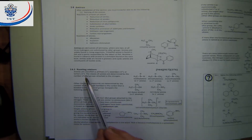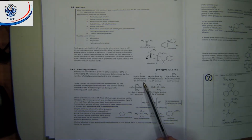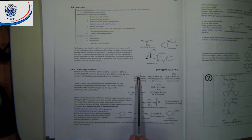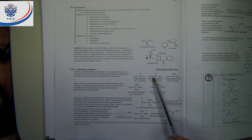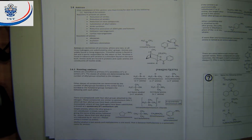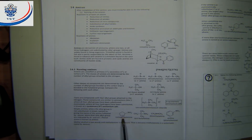Now, if we name amines, we look at the substituent attached and we have a methyl followed by the word amine — methylamine. Two of them will become dimethylamine — and you see here you have a symmetrical amine. Three of them gives trimethylamine. Every time we are dealing with amines, the word amine is going to follow.